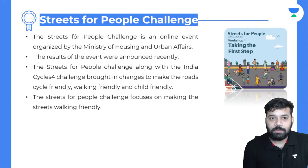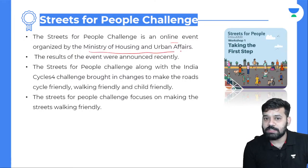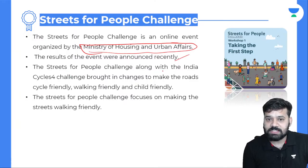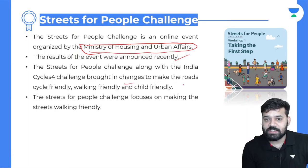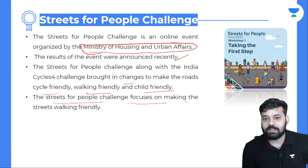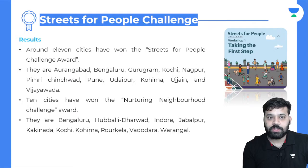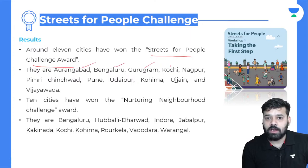Moving to the next topic: Streets for People Challenge. This is an online event organized by the Ministry of Housing and Urban Affairs. Along with the India Cycles for Change Challenge, it brought changes to make roads cycle-friendly, walking-friendly, and child-friendly. Around 11 cities have won the Streets for People Challenge Award. They are: Aurangabad, Bengaluru, Gurugram, Kochi, Nagpur, Pimri Chinchwad, Pune, Udaipur, Kohima, Ujjain, and Vijayawada.